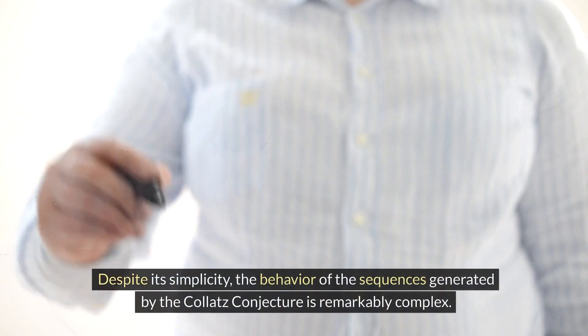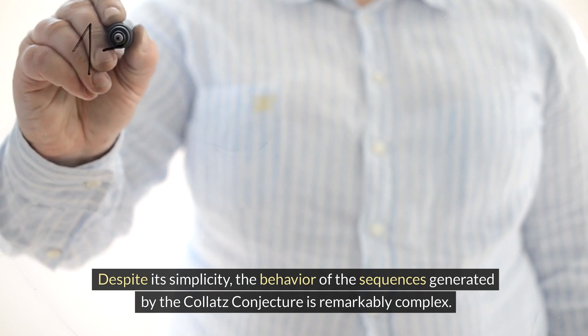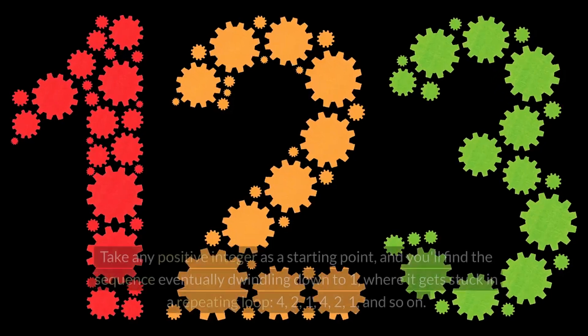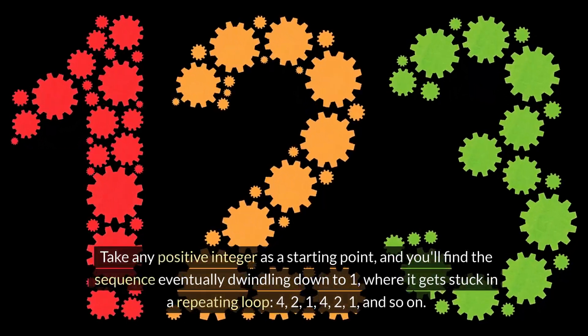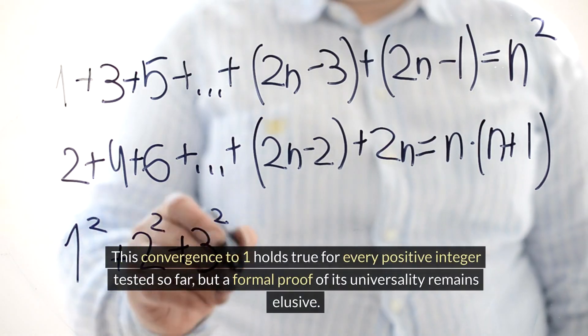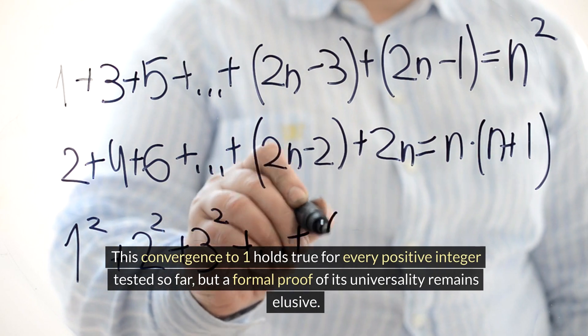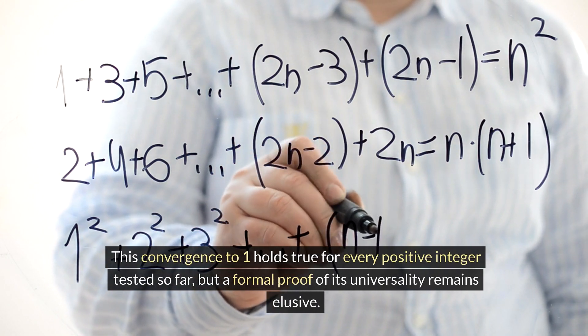Despite its simplicity, the behavior of the sequences generated by the Collatz conjecture is remarkably complex. Take any positive integer as a starting point, and you'll find the sequence eventually dwindling down to 1, where it gets stuck in a repeating loop: 4, 2, 1, 4, 2, 1, and so on. This convergence to 1 holds true for every positive integer tested so far, but a formal proof of its universality remains elusive.